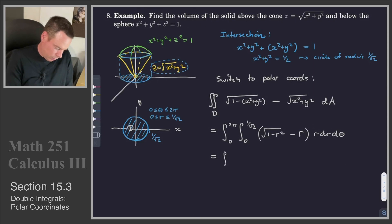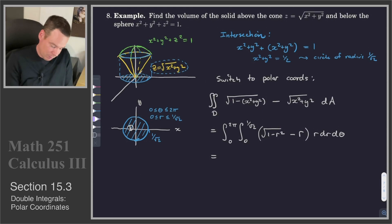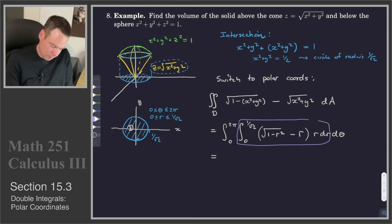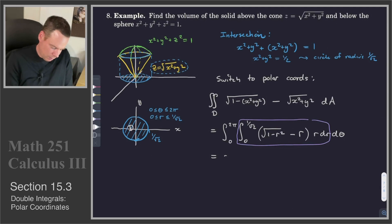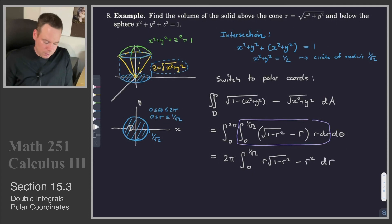The innermost integral has no theta, so it's completely constant relative to theta. That means I can do the theta integral on its own and multiply the result. The theta integral from 0 to 2 pi is just 2 pi. So the expression becomes 2 pi times the integral from 0 to 1 over root 2 of r root(1 minus r squared) minus r squared dr.